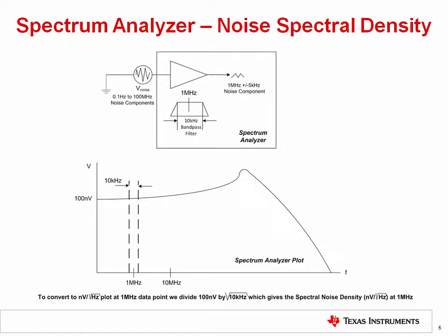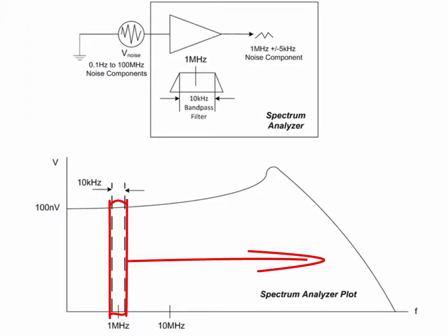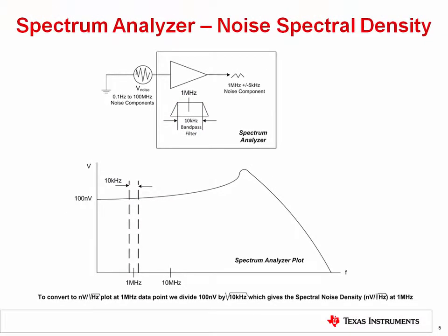Let's now discuss spectrum analyzers. The spectrum analyzer is a very useful instrument for measuring noise because it can show you the shape of the noise spectral density curve, whereas the oscilloscope does not give information about the frequency content of your system noise. Conceptually, the spectrum analyzer works by sweeping a bandpass filter over frequency and plotting the filter's output. The width of the bandpass filter is referred to as the measurement bandwidth. Averaging is also used by the instrument to improve measurement accuracy.